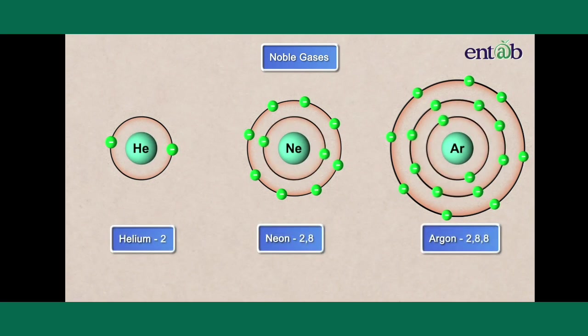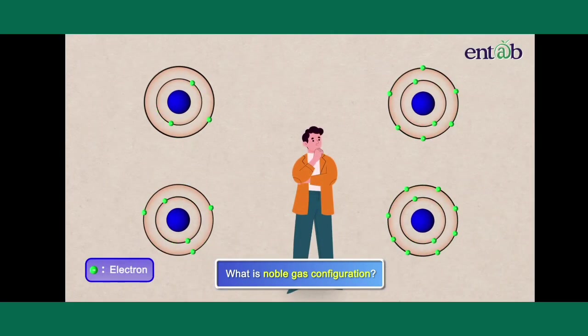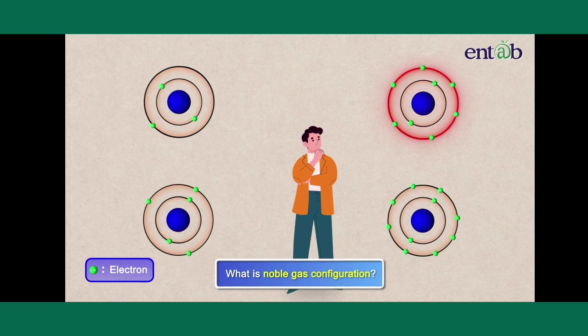The noble gases are chemically unreactive. So, what is noble gas configuration? Is it having one electron in the valence shell? Or having three electrons in the valence shell? Or having six electrons in the valence shell? Or having eight electrons in the valence shell?